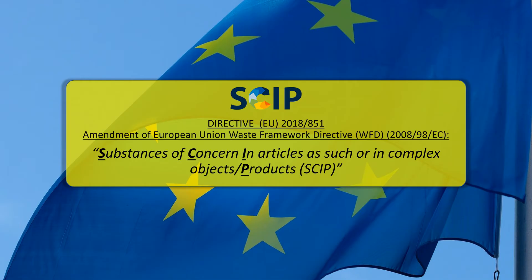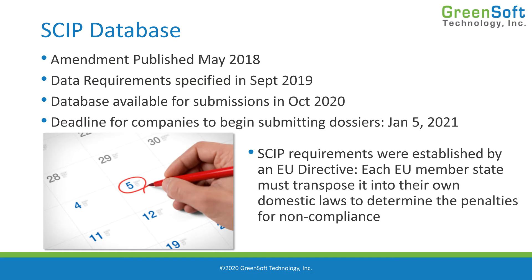SCIP stands for Substances of Concern in articles as such or in complex objects or Products. It's a database that was established by the European Chemicals Agency in response to requirements put in place by an amendment to the European Union's Waste Framework Directive.